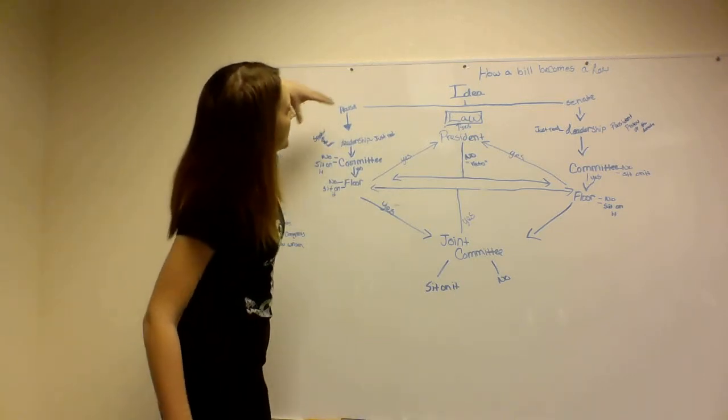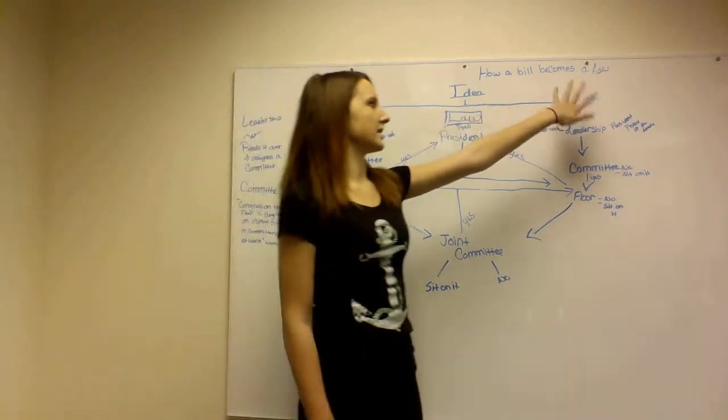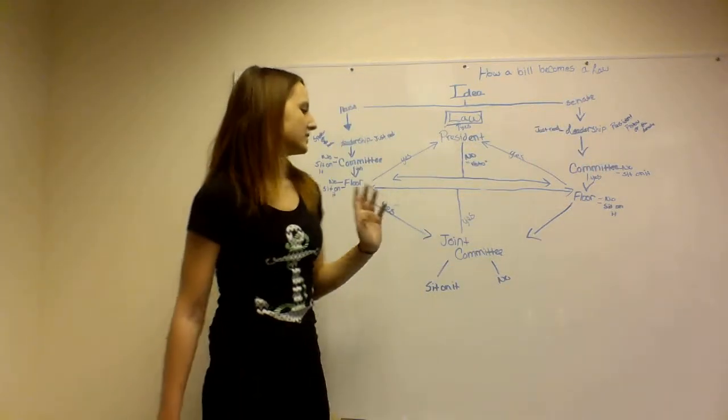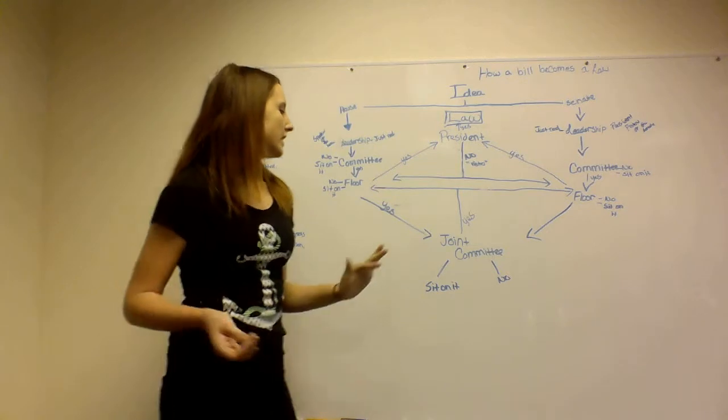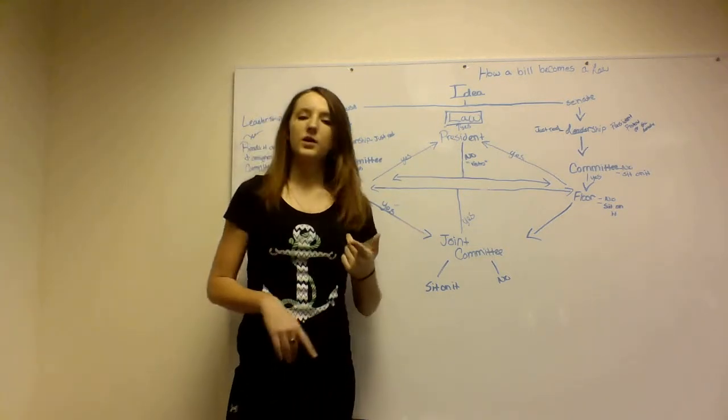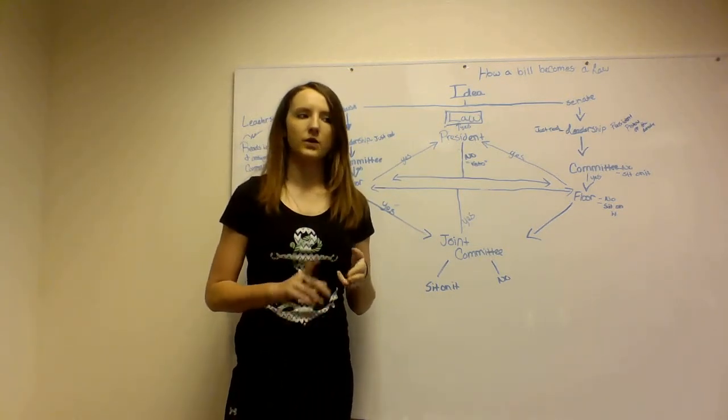And here's where the two of them come together. You take members of the House and some members of the Senate and bring them down here into what is called a joint committee. Now, at the joint committee, they can vote no, or they can sit on it, or they can vote yes.